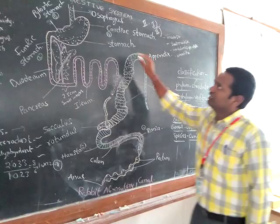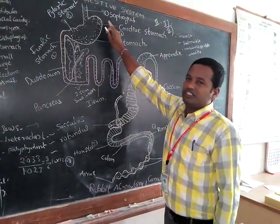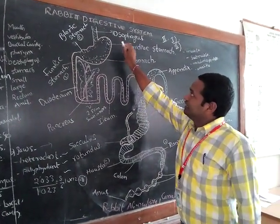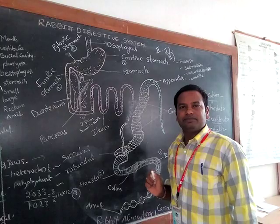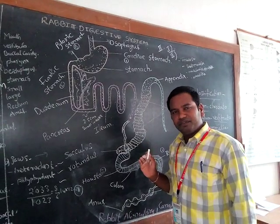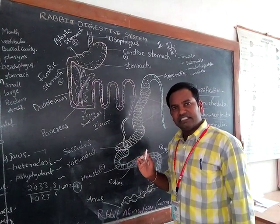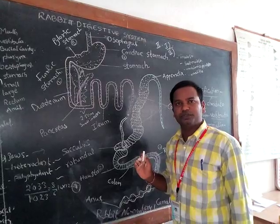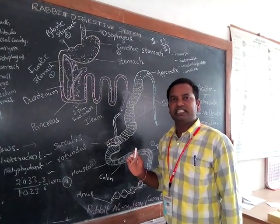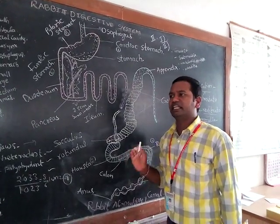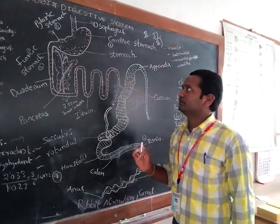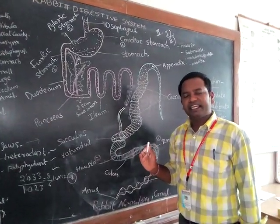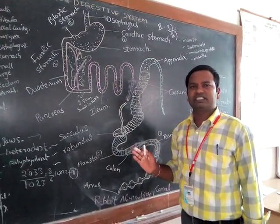Next, the Rabbit Digestive System. Digestion means that complex food substances are changed to simple absorbable materials — this process is called digestion. Digestion is a chemical process.